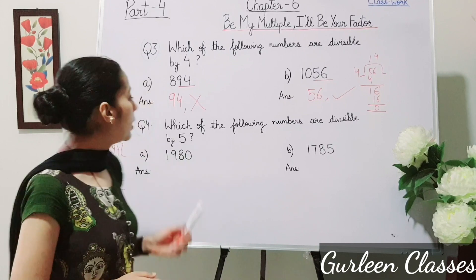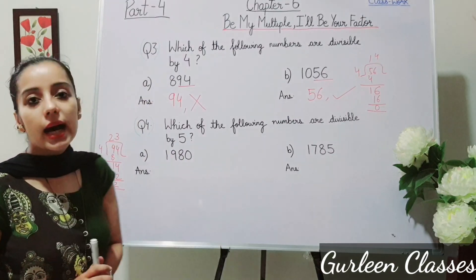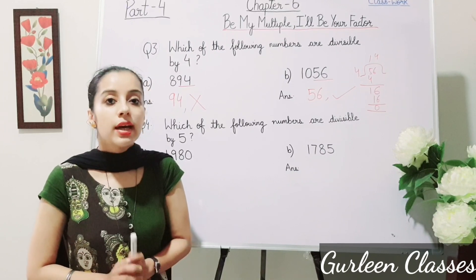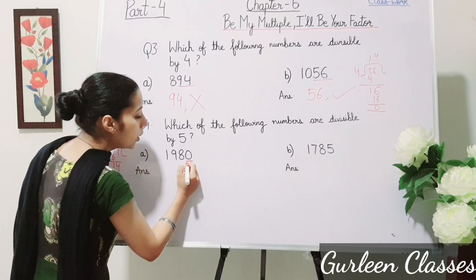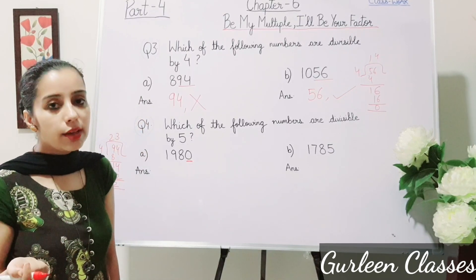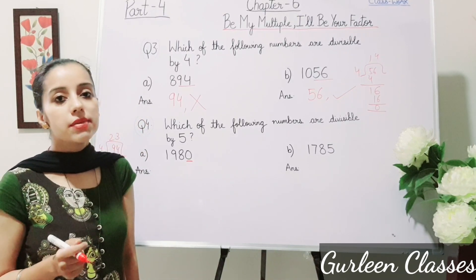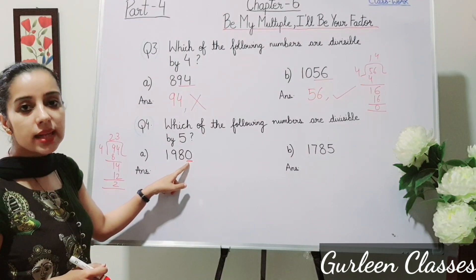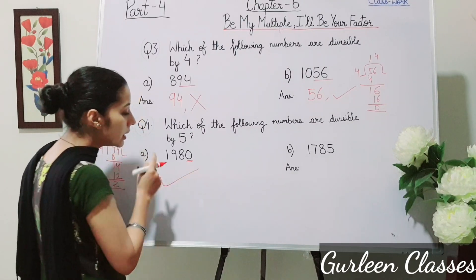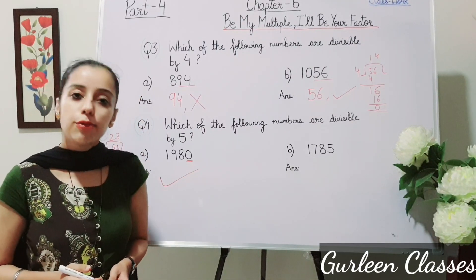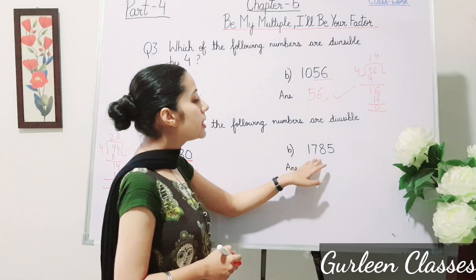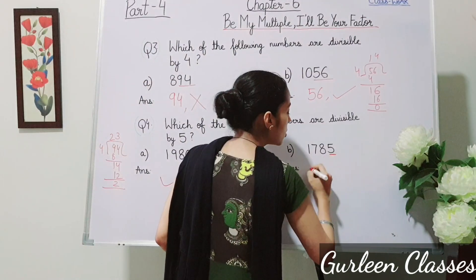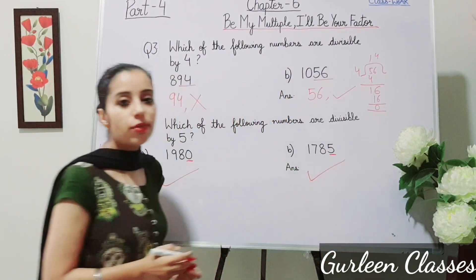Question number 4: Which of the following numbers are divisible by 5? A number is divisible by 5 if the digit in the ones place is 0 or 5. Part A: 1980 — the ones digit is 0, so yes, it is divisible by 5. Part B: 1785 — the ones digit is 5, so yes, it is divisible by 5.